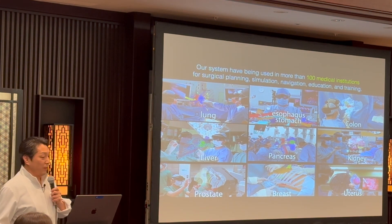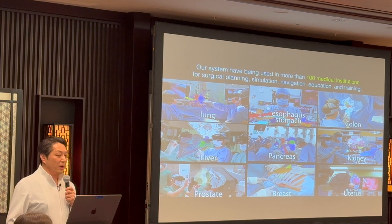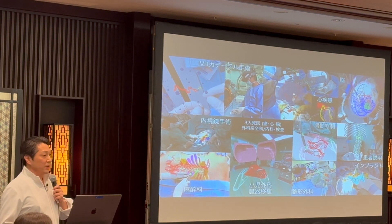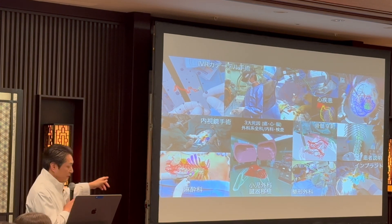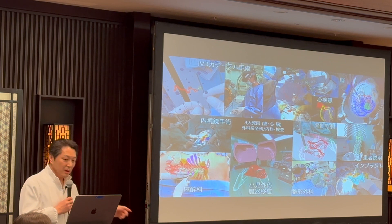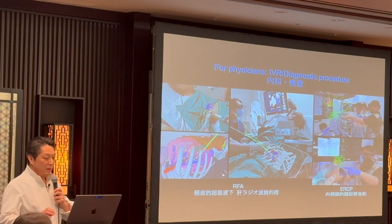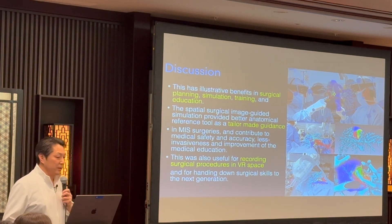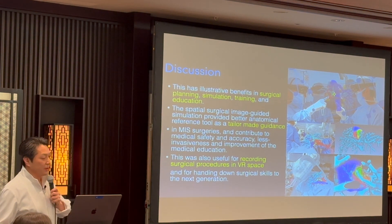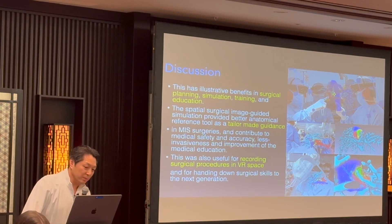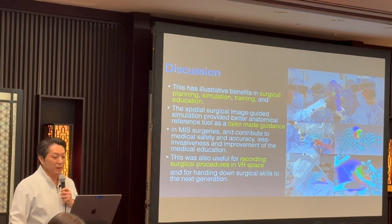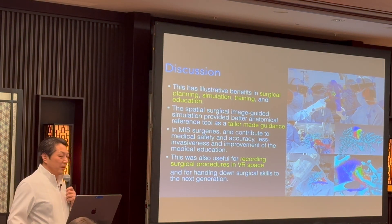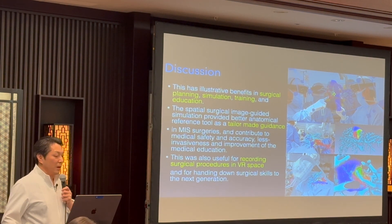Our system has been used in more than 100 medical institutions for surgical planning, simulation, navigation, education, and training — not only for surgery but also for physicians, anesthesia, patient-informed consent, and more. This illustrates the benefit in surgical planning, simulation, training, and education. Spatial surgical imaging simulation provides better anatomical reference compared to terrestrial navigation guidance in minimally invasive surgeries, and contributes to medical safety, accuracy, and improvement through medical education.